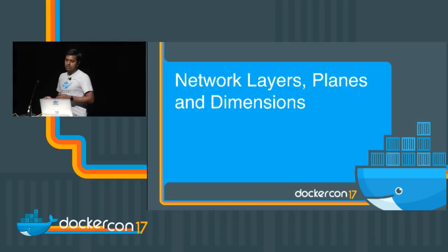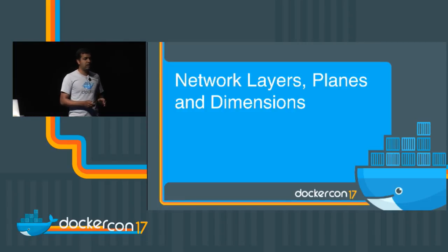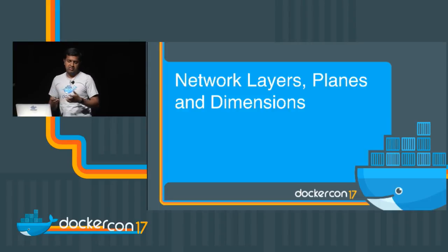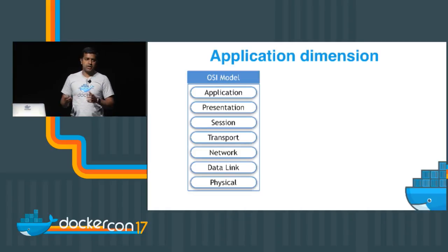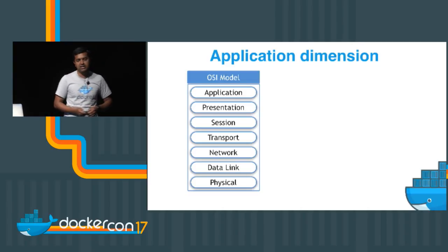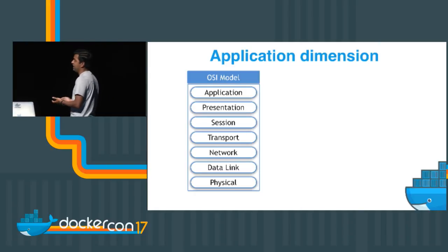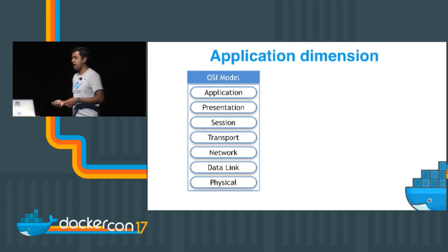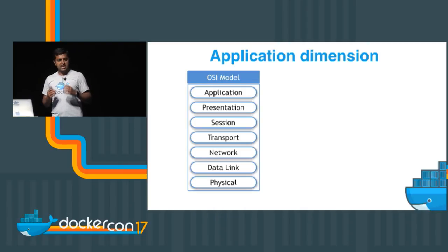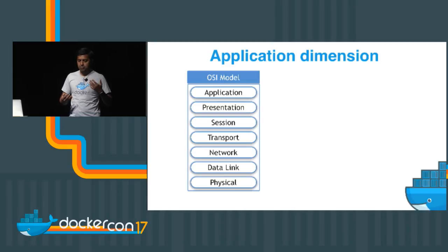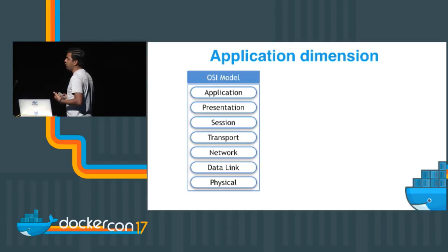Before we dig deeper into the networking aspects of Docker, let me give a high-level overview of the various dimensions and views of networking from various individuals and groups. This is the application dimension — Networking 101. OSI layering is made of seven layers, from the application layer down to the network, data link, and physical layer. It's a beautiful model where each layer has its own functionality, so innovation can happen independently at each layer with defined interfaces. That's the fundamental OSI model, which remains relevant after decades of existence.